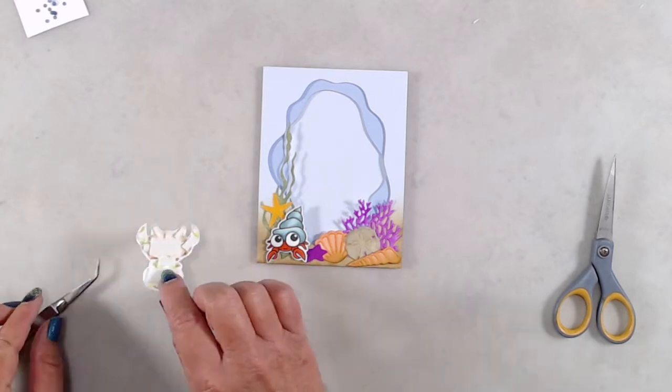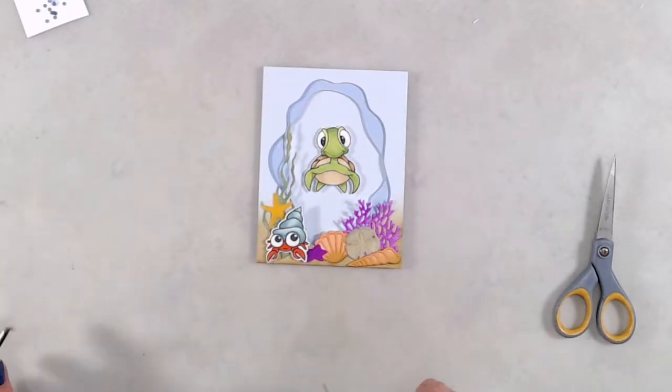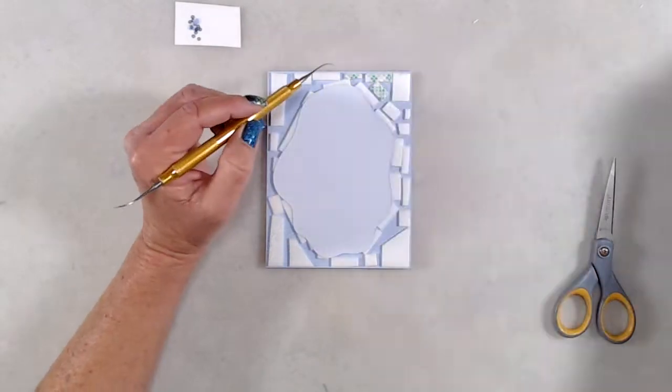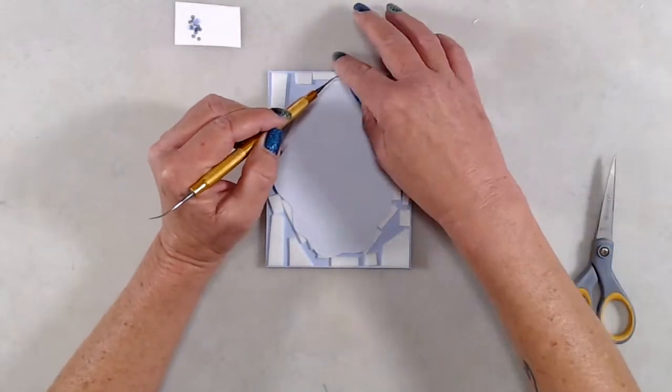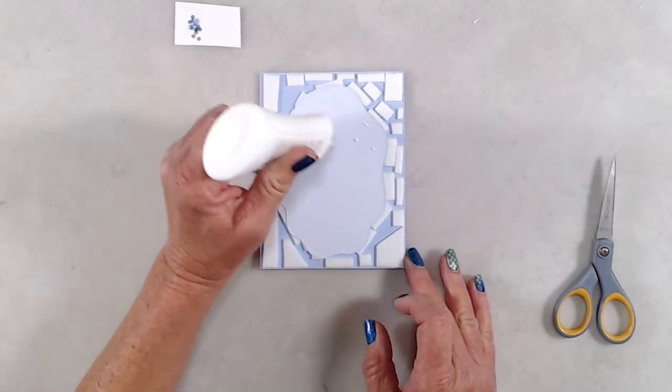I wanted to make sure that my yellow starfish was still showing, so that's why I adhered the orange starfish higher up on that seagrass so that it would still be visible even with my little hermit crab down on the bottom. Then for my little turtle, I just adhered him right smack in the center of the cutout openings.